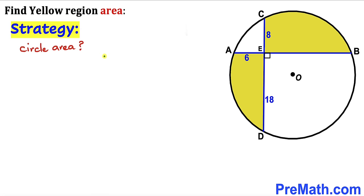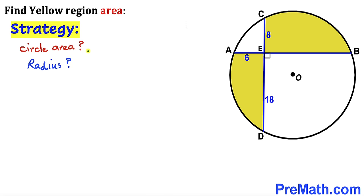Here's our strategy: since this yellow shaded region is part of the whole circle, we must calculate the area of this circle first. In order to do that, we must find the radius of this circle.